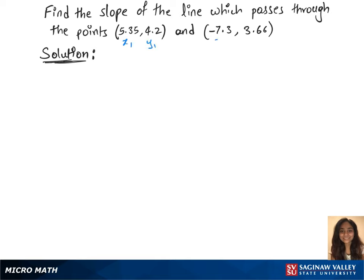we'll first name the points as x1, y1 and x2, y2. Now, let's use the slope formula which is m equals y2 minus y1 over x2 minus x1.